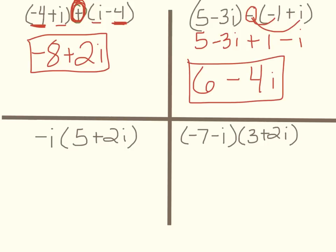Down here we have multiplication, negative i times 5 plus 2i. So of course you're going to distribute. We're going to get negative 5i, and then we're going to get minus 2i squared. But don't leave it as i squared. Every time you see i squared, you have to think, I know what i squared is. i squared is negative 1. So cross it out and write negative 1.